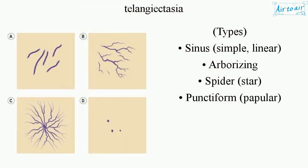Types of telangiectasia: Sinus, Simple, Linear, Arborizing, Spider/Star, Punctiform, and Papular.